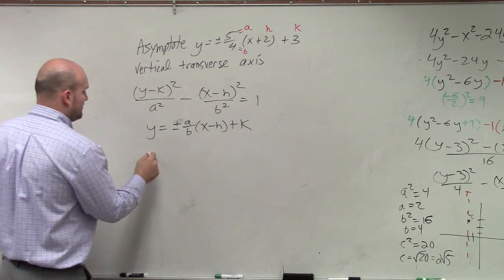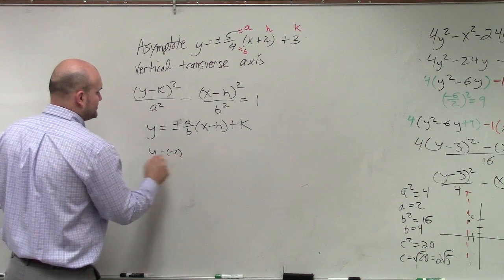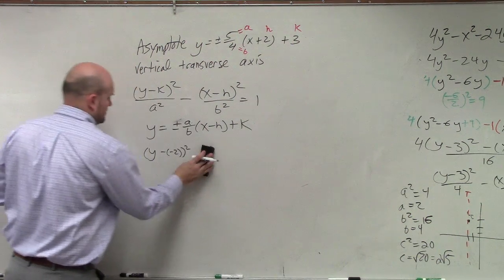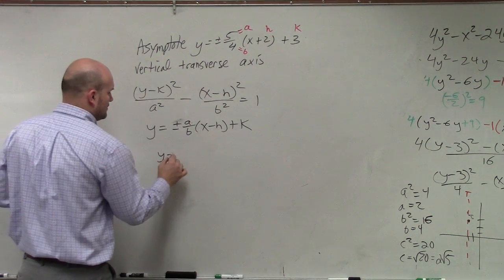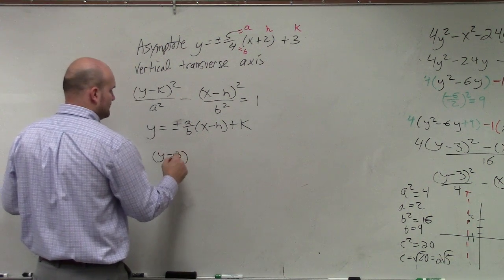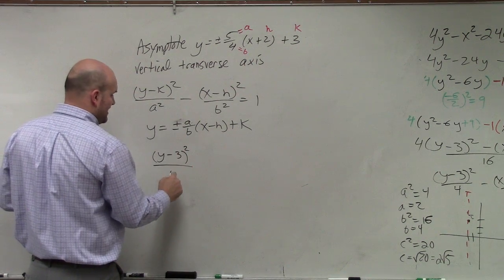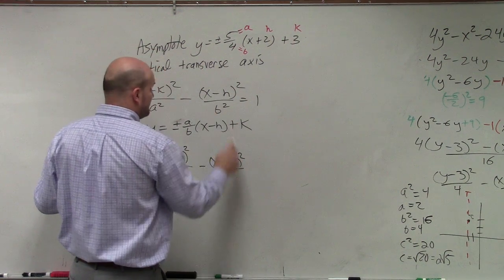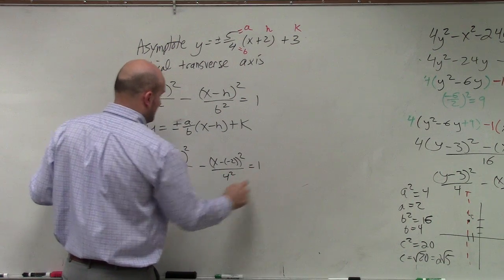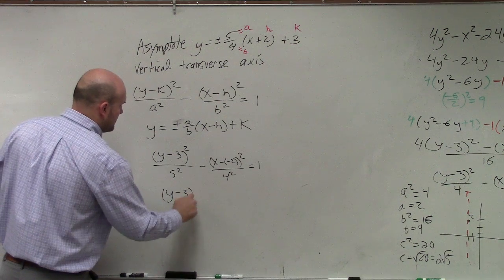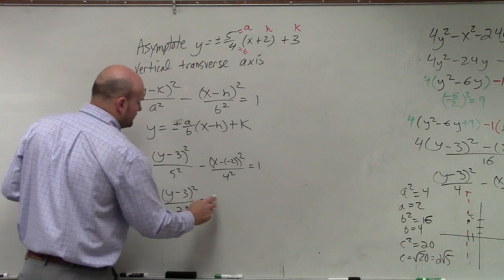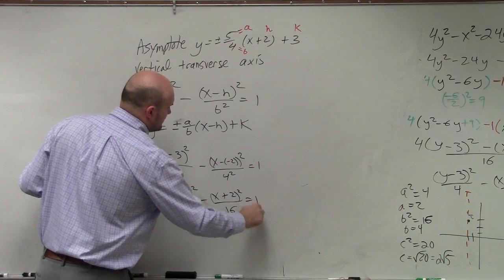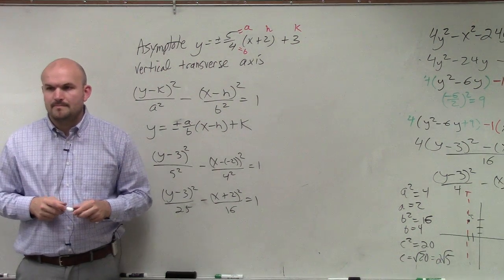So I really have y minus 3 — because 3 is k — squared all over a squared, which is 5 squared, minus x minus negative 2, squared over b squared, which is 4 squared, equals 1. And therefore, I get y minus 3 squared over 25, minus x plus 2 squared over 16, equals 1.